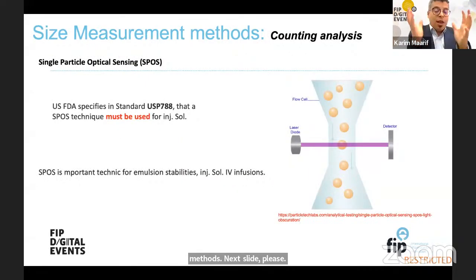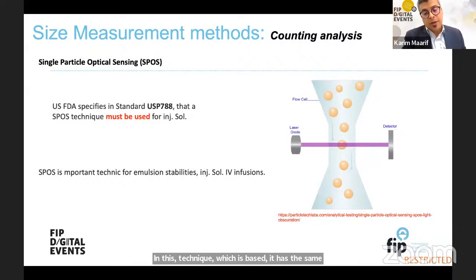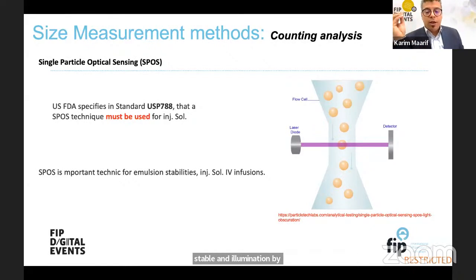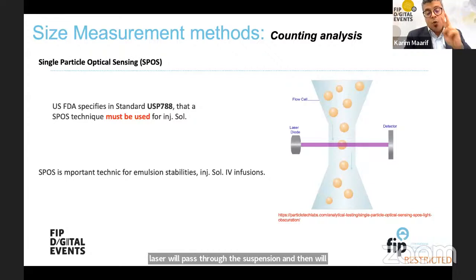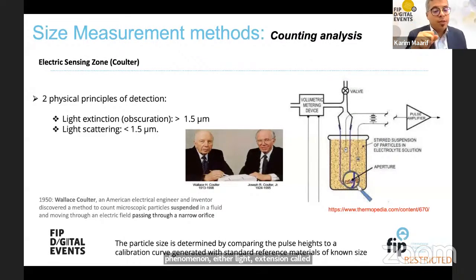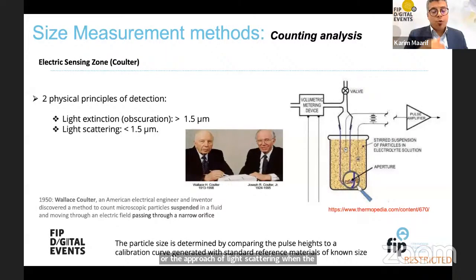In single particle optical sensing, which has the same concept as the Coulter system but without an electric field, particles in suspension move in an area with stable illumination by laser. The laser source passes through the suspension to measure the particle size. We distinguish two phenomena: light extinction called obscuration when the particle size is higher than 1.5 micrometers, or light scattering when the particle is below 1.5 micrometers. Both approaches are used in the same equipment.